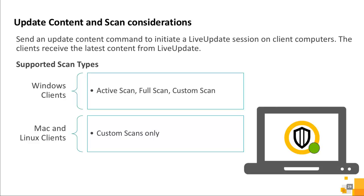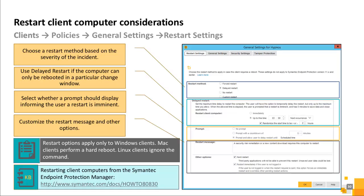Sending an Update Content command initiates a live update session on the client computer, and the endpoint will receive the latest content from live update. Windows clients support all three scan types, whereas Mac and Linux clients support only the custom scans specified in the Virus and Spyware Protection Policy. You can also reboot computers recently upgraded or take action on detections. To configure restart options, browse to General Settings below the Policies tab. If you can only reboot within a particular change window, use the Delayed Restart option. Note that restart options apply only to Windows clients; Mac clients perform a hard reboot, and Linux clients ignore the command.